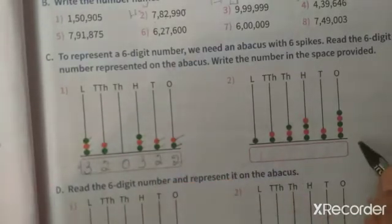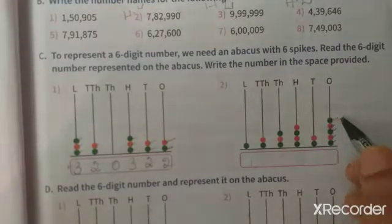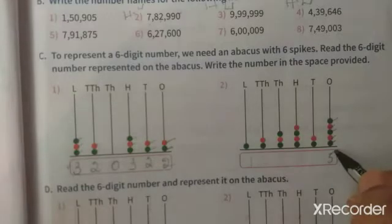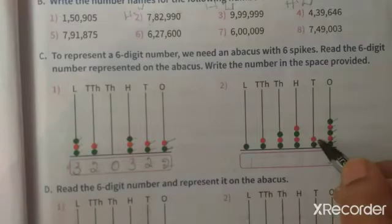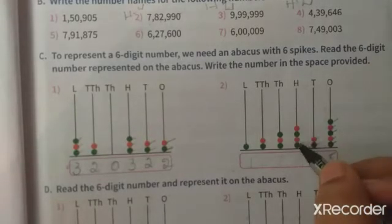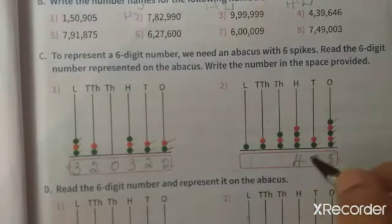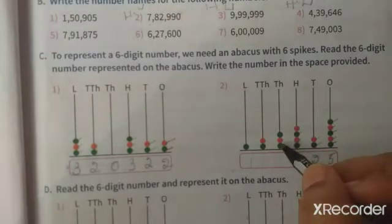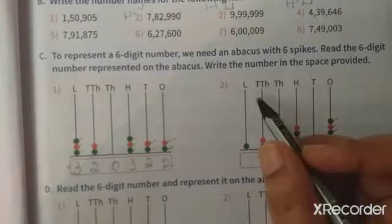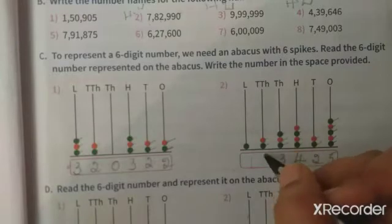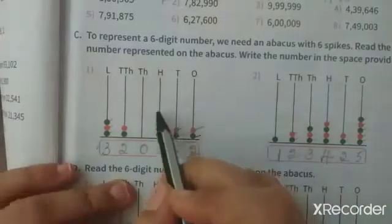Counting the beads: totally five in the ones place. Tens place: one, two — two beads. Hundreds place: one, two, three, four — four beads. Ten thousands place: one, two, three — three beads. Then in the next place: one, two — two beads. And in the last place, one bead in the sixth spike.